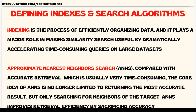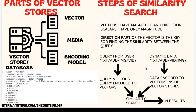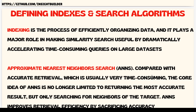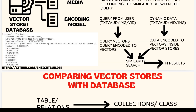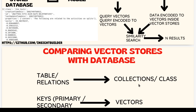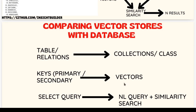Now let's go a little deeper. We already saw the parts of vector stores and how they're internally built. The point where dynamic data or the user's query is converted to vectors — and how those vectors help with similarity search — needs more explanation. In vector stores, the data is pushed in, encoded, and converted into an index. The vectors created act as the key to the data.